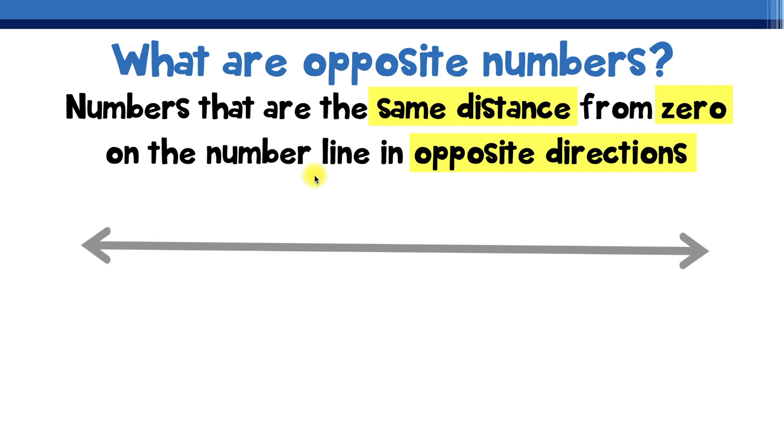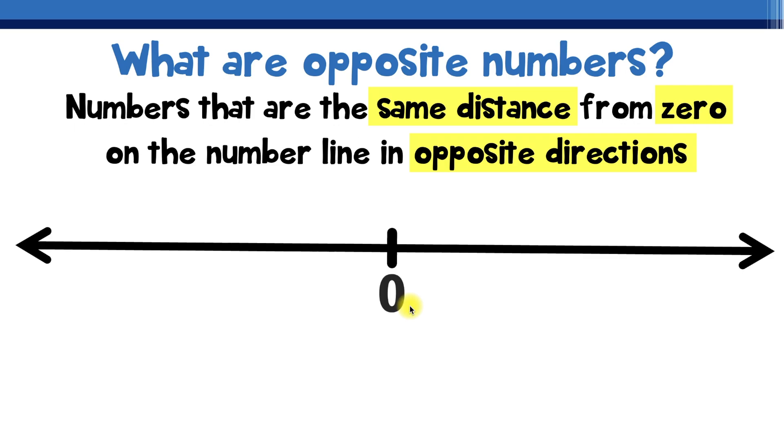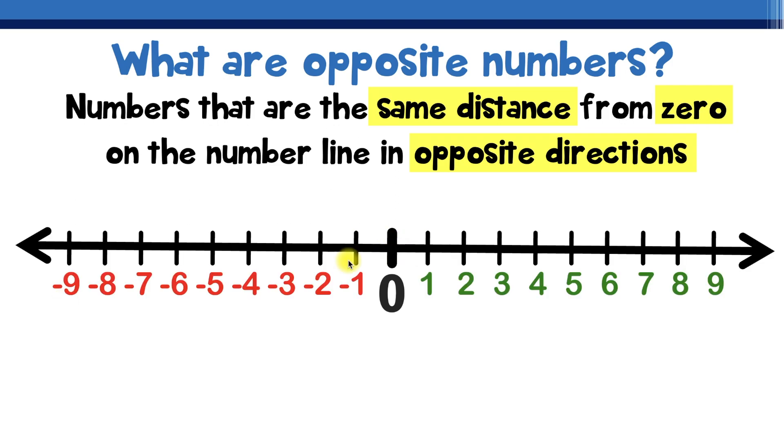So let's start with a number line and on this number line let's start with zero and let's start with something very basic like counting by ones. So let's say we have a point at negative one. Well negative one is one space to the left of zero on the number line. So the opposite of negative one would be one space away from zero but in the opposite direction which means it would be positive one. So we would say negative one and positive one are opposites.